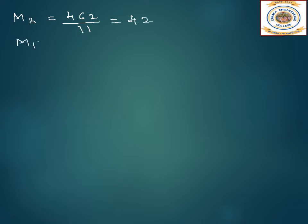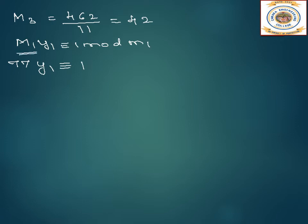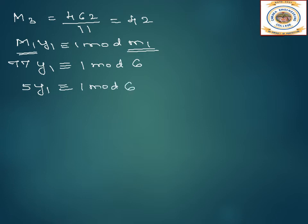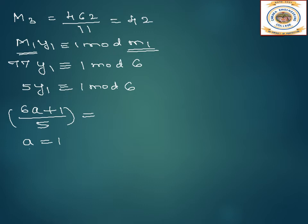Now we find y1. M1·y1 ≡ 1 mod m1. Capital M1 is 77, and 1 mod 6. Since capital M1 and small m1 are relatively prime, the gcd is 1 and we have a multiplicative inverse. Since 77 is greater than 6, we first do 77 mod 6, which gives 5. So 5·y1 ≡ 1 mod 6. Writing this as (6a + 1) / 5, substituting a = 1, 2, 3 does not give a whole number, but for a equal to 4, we get the answer as 5.